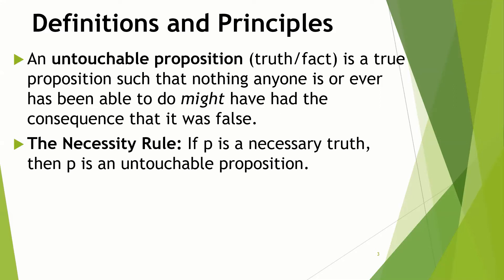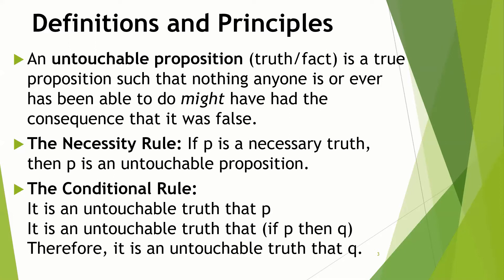A couple rules are needed for the argument to work. One is the necessity rule: if P is a necessary truth, something that cannot possibly be false, then P is going to be an untouchable proposition — something that no one could do anything to possibly make false. Then we have the conditional rule: if it's an untouchable truth that P, and an untouchable truth that the conditional 'if P then Q' holds, then it's an untouchable truth that Q. This seems reasonable — if no one can do anything about P, and no one can do anything about the connection between P and Q, then Q is also untouchable.